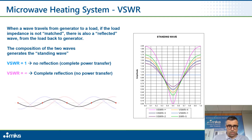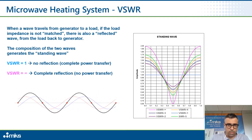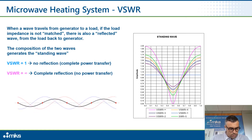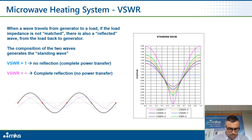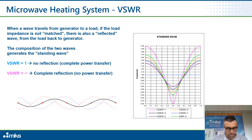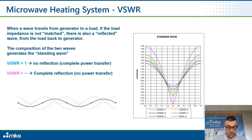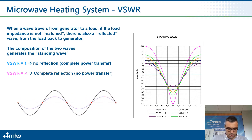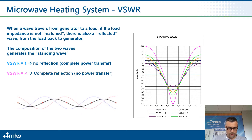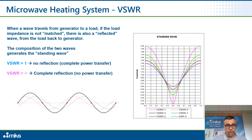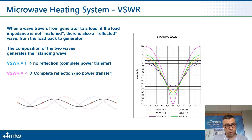First of all, let's talk about the VSWR, which is Voltage Standing Wave Ratio. This is a parameter which indicates the ratio of maximum and minimum level of voltage in the transmission line. In other words, this means how much reflected power we have in our cavities.